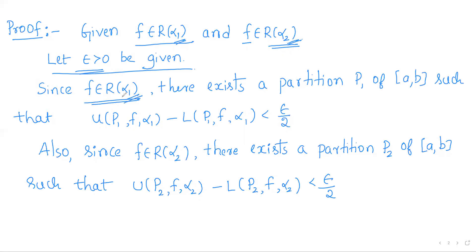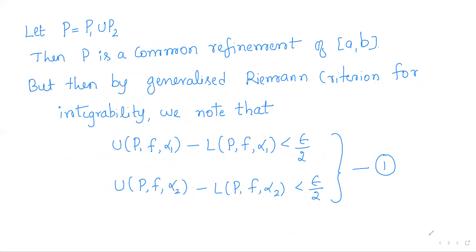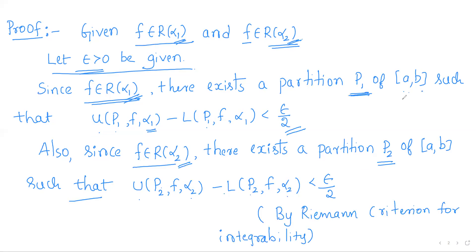Since f is Riemann-Stieltjes integrable with respect to α₁, there is a partition P₁ of [a, b] such that U(P₁, f, α₁) − L(P₁, f, α₁) < ε/2. Similarly, as f is Riemann-Stieltjes integrable with respect to α₂, there is a partition P₂ of [a, b] such that U(P₂, f, α₂) − L(P₂, f, α₂) < ε/2. This is by the Riemann criterion for integrability.